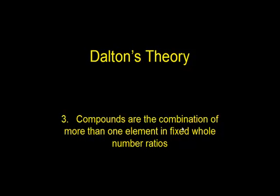Number three: compounds are the combination of more than one element in fixed whole number ratios. Our favorite example is water, which consists of two parts hydrogen to one part oxygen. Another example is carbon dioxide, which consists of one part carbon to two parts oxygen. They're always in these whole number ratios — that was one of the things Dalton brought to our understanding.